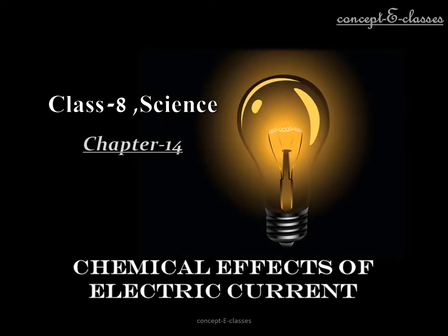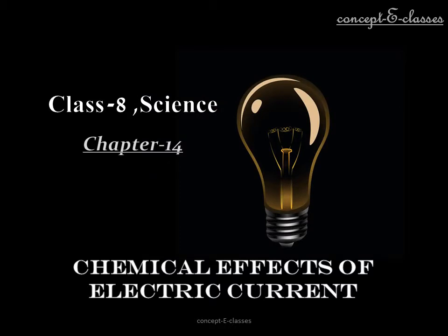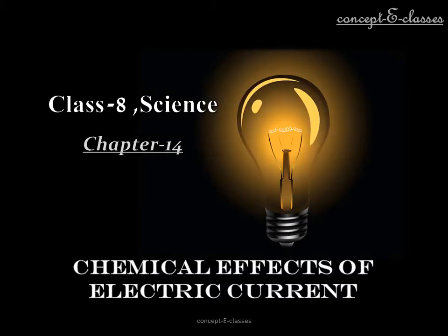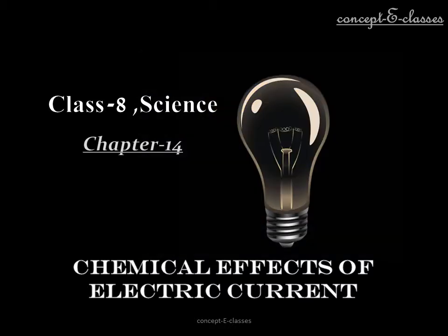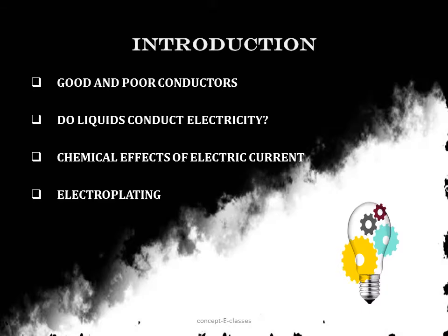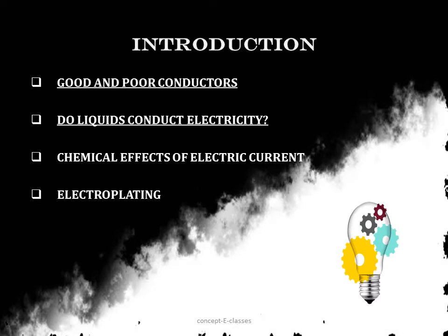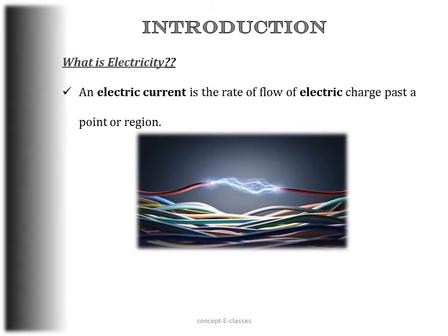This is Concept E Classes, and today we will deal with Chapter 14 of Class 8 Science: Chemical Effects of Electric Current. In this chapter we will see what are good and poor conductors of electricity, how do liquids conduct electricity, the chemical effects of electric current, and finally electroplating.